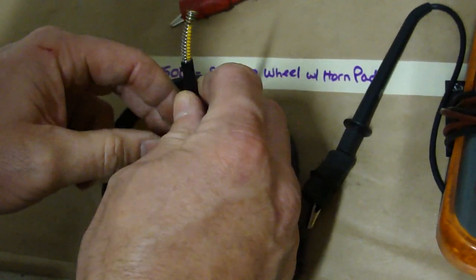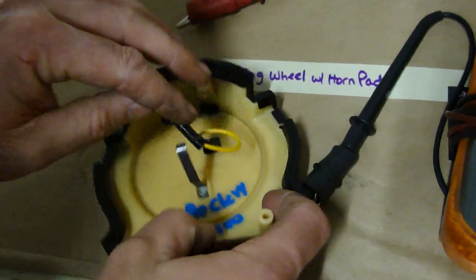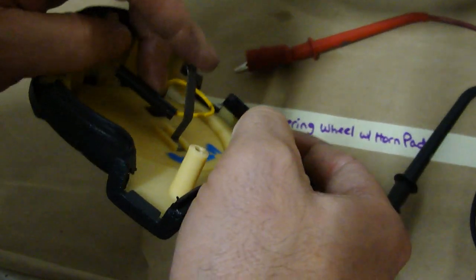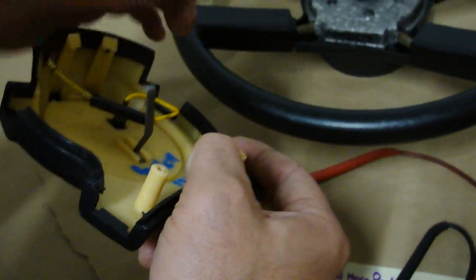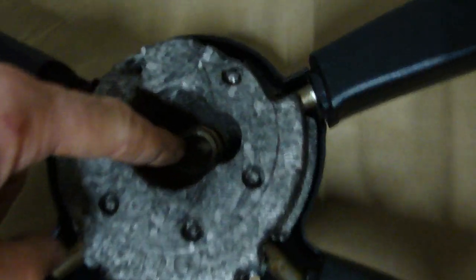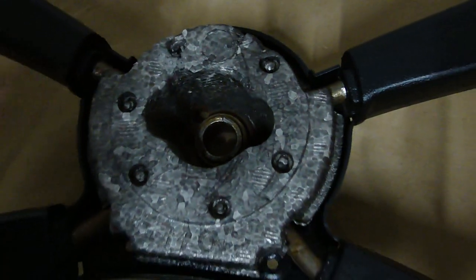This obviously goes to the horn contact for your cancel cam, and this needs to have a good ground. When it gets put on it goes into the hole right here and that's basically the top of your steering column comes through.